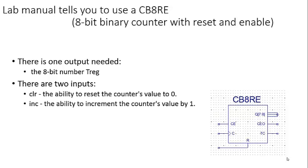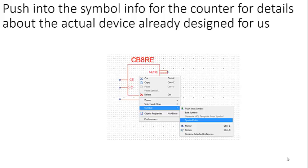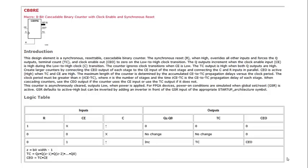If we take a look at our symbol, we want to push into our symbol to find out what each of the inputs do. We can do that by choosing symbol information, and we see that we have a table with R, CE, and C, which are our inputs. We see how those work to change the outputs. R is our reset, and CE is our count enable.